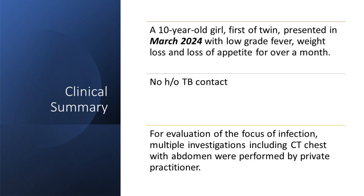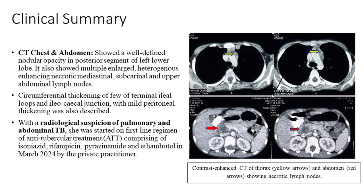We start with a 10-year-old girl who presented in March with low-grade fever, weight loss, and loss of appetite for a month. Another pediatrician did investigations including a CT chest-abdomen, finding necrotic abdominal and mediastinal nodes and circumferential thickening of the ileocecal valve. With a radiological suspicion of TB, they started the child on first-line ATT without performing a biopsy for microbiological diagnosis.